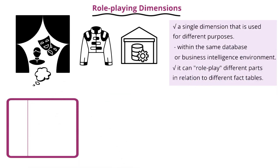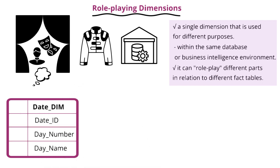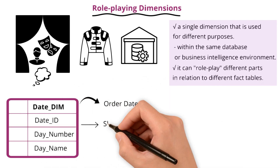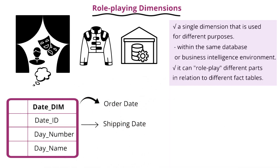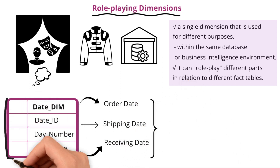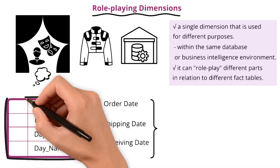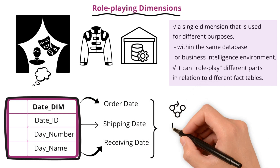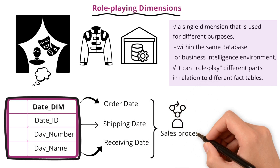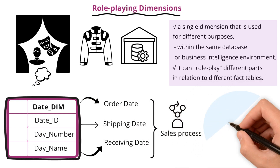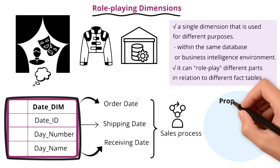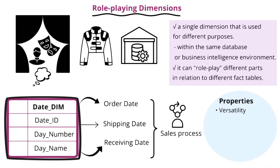For instance, a date dimension could be used as an order date, a shipping date, and a receiving date. Each of these dates may reference the same date dimension table, but play different roles depending on the context within the sales process. Its key properties are: versatility, context-specific use, efficiency, and complexity management.